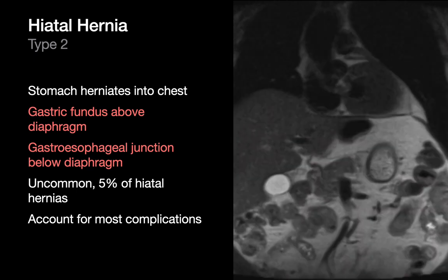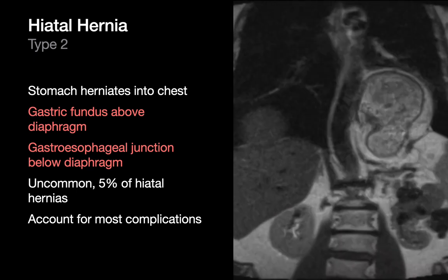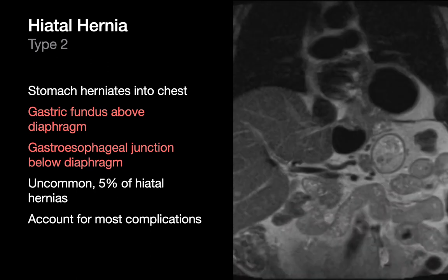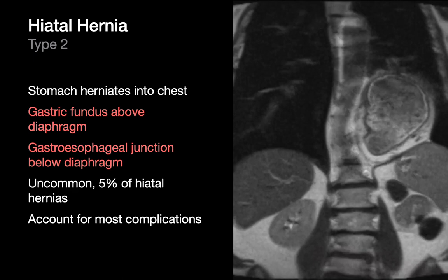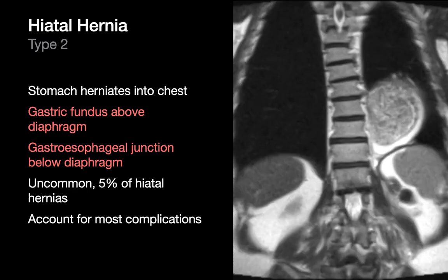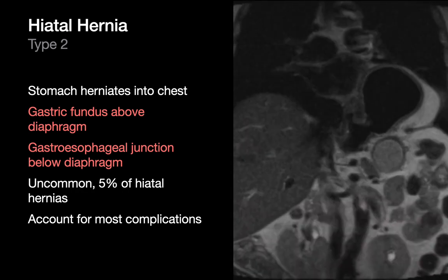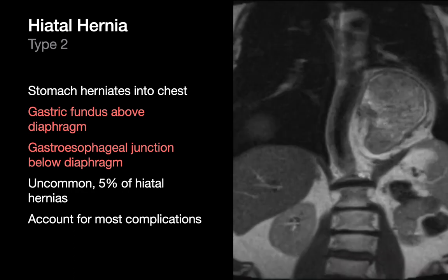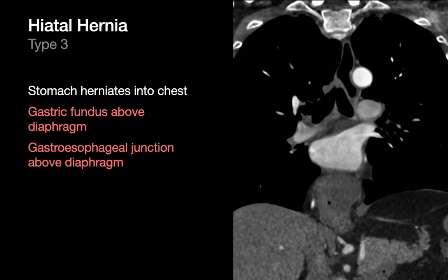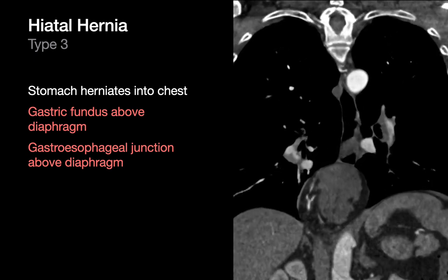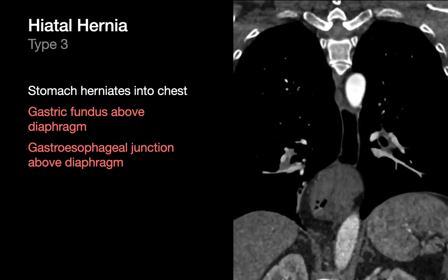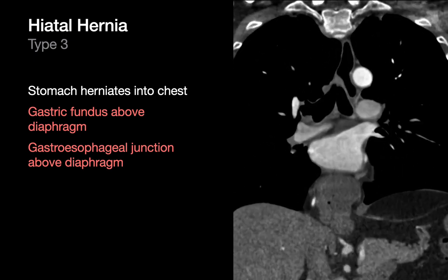Hiatal hernias are common and divided into four major types. Type 1 sliding hiatal hernias are the most common, but our sensitivity and specificity on chest x-ray and CT are pretty mediocre. Type 2 hiatal hernias are rare — the gastric fundus is above the diaphragm but the GE junction is under the diaphragm. Type 3 hiatal hernias are the most common type after type 1 sliding hernias; in type 3, both the GE junction and the gastric fundus are above the diaphragm.